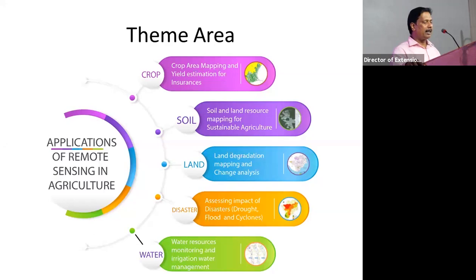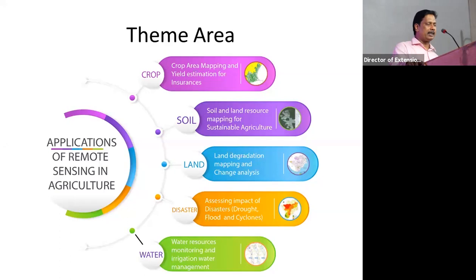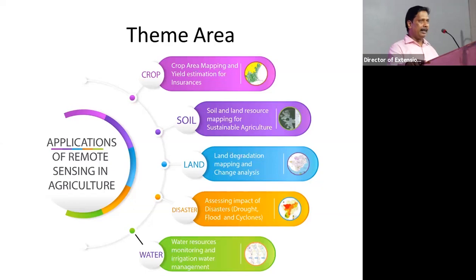The fourth theme area is disaster. TNAU ensures disaster preparedness for the Department of Agriculture and CRA by providing information on drought, flood, and cyclone. For drought, we continuously monitor with six different parameters using remote sensing. For floods, we have the capability to provide flood information within three to four hours of a satellite pass. In 2018, for the Gaja cyclone, we assessed the damage on individual coconut plantations — counting how many trees were uprooted or damaged.